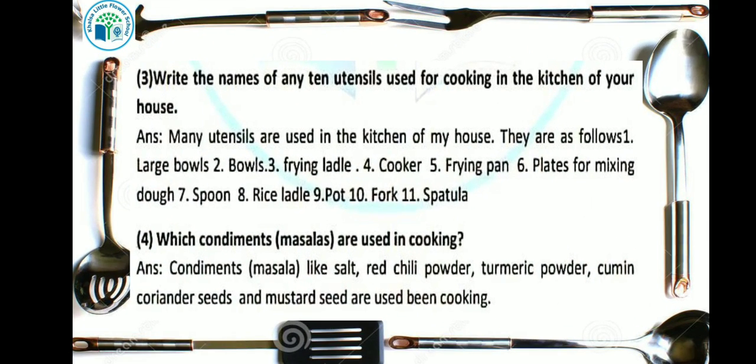Next: write the names of any 10 utensils used for cooking in the kitchen of your house. Here we need to write the names of 10 utensils used in our home kitchen — such as large bowls, bowls, frying ladle, cooker, frying pan, plate for mixing dough, spatula, spoon, rice ladle, pot, knife, fork — all these utensils are used in our home kitchen.